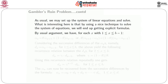By the usual argument using the Markov property — conditioning on the first step — for every x between 1 and b−1, α_x = θ·α_{x+1} + (1−θ)·α_{x−1}. Simple algebra gives that this is equivalent to: θ·(α_{x+1} − α_x) = (1−θ)·(α_x − α_{x−1}), which holds for all x between 1 and b−1.